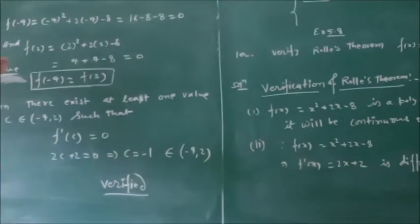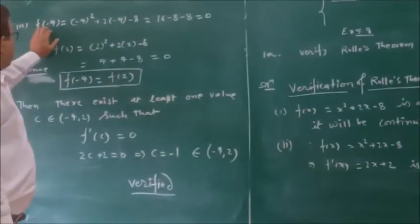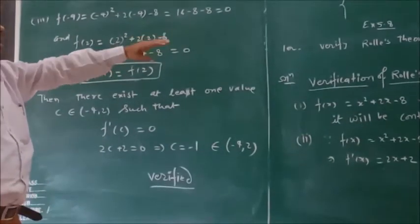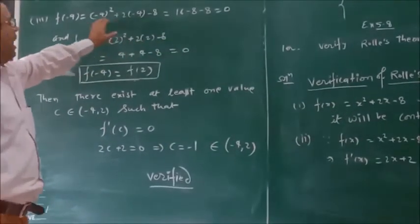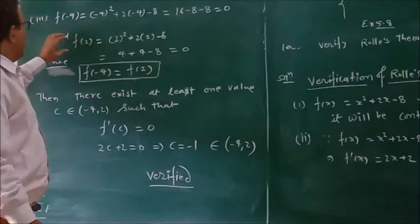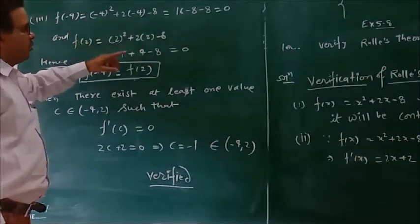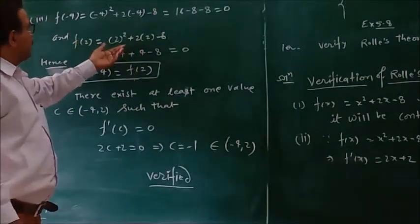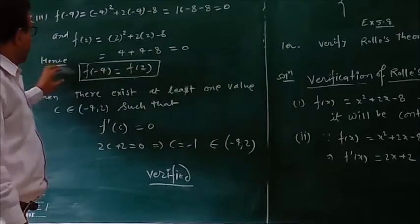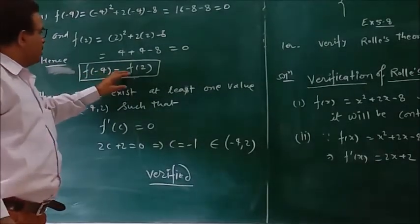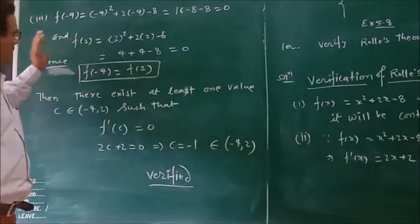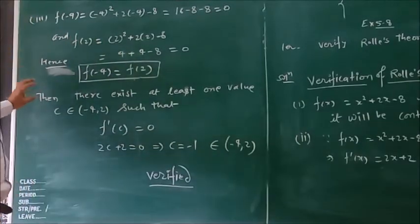Your first step: f(x) equals x squared plus x minus 8 is a polynomial function, so it will be continuous on minus 4 to 2. It is also a polynomial, so it will be differentiable on the open interval minus 4 to 2. Now checking the third point.